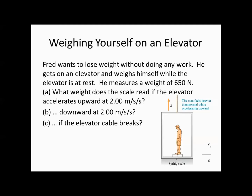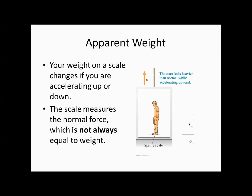Now we're going to look at what's called apparent weight. Fred wants to lose weight without doing any work, so he gets on an elevator and weighs himself while it's at rest — he measures a weight of 650 newtons. What happens if the elevator accelerates upward at 2 meters per second squared? What weight will the scale read? The apparent weight is the weight on your scale, and it changes depending on if you're moving up or down. The scale actually measures the normal force, which is not always equal to your weight.